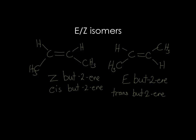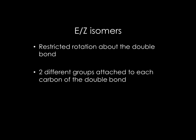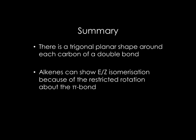A common exam question asks you to explain why some molecules show EZ isomerisation. That's because of the restricted rotation about the double bond, and also the two different groups attached to each carbon of the double bond. To summarise: the double bond of alkenes is made up of a sigma bond and a pi bond. The pi bond is formed by sideways overlap of p orbitals above and below the plane of the carbon atoms. There is a trigonal planar shape around each carbon of a double bond, and alkenes can show EZ isomerisation because of the restricted rotation about the pi bond.